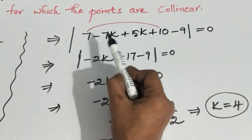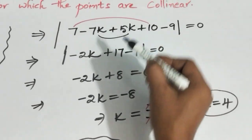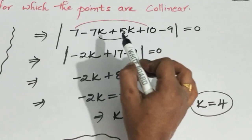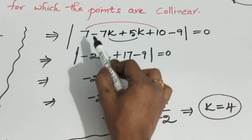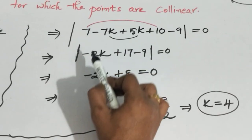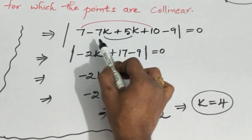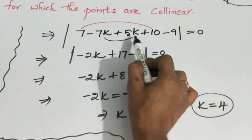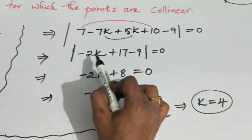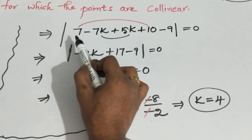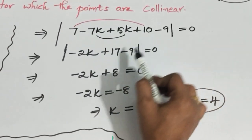Now combining the K terms: -7K plus 5K. Since 7 is greater and carries a minus sign, the result is minus 2K. Then the constant terms: +7 plus 10 gives 17, and 17 minus 9 gives 8. So we have -2K + 8 = 0.